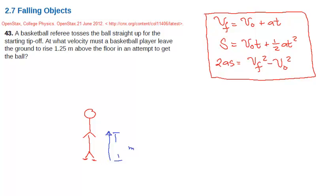Now, what are we being asked? So we are asked for what must be the velocity that the player will initially leave so that it will have a maximum height to rise 1.25 meters above the floor. Note that this will be the maximum height, right? Because after that,